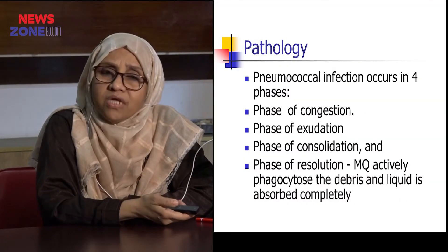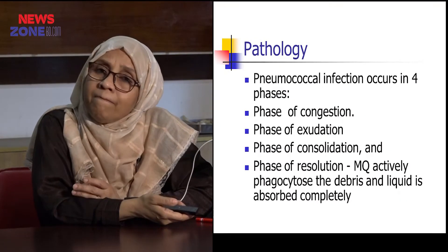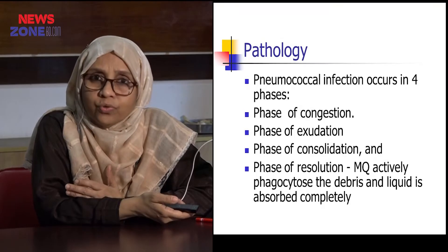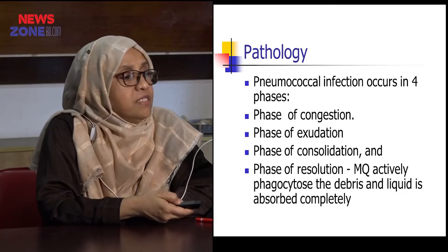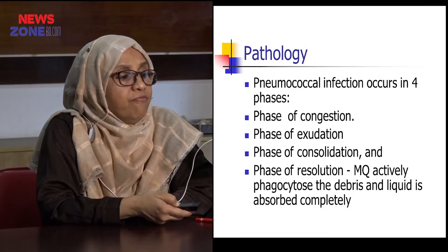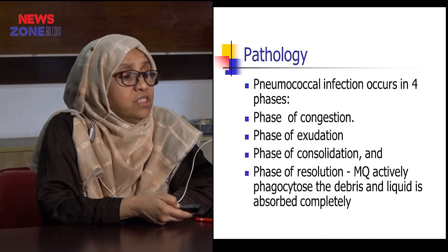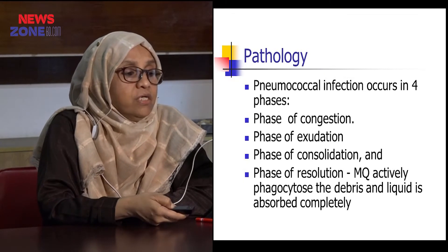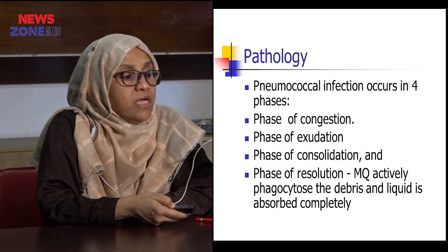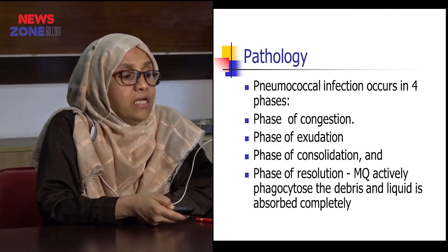Pneumococcal infection usually occurs in four phases, sometimes asked in clinical examinations: the phase of congestion, phase of exudation, phase of consolidation, and phase of resolution — where macrophages actively phagocytose the debris and liquid is absorbed completely. If the phase of resolution occurs, it represents very good recovery on the part of the patient.